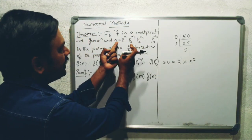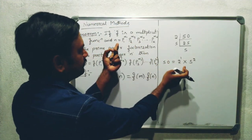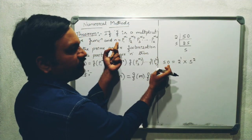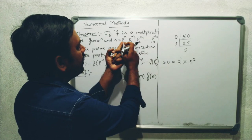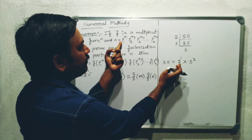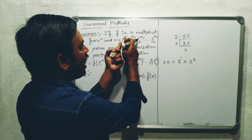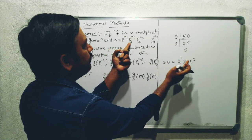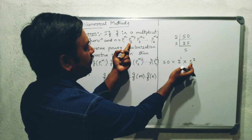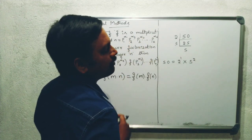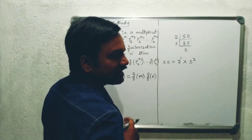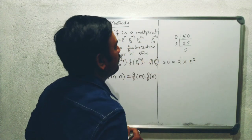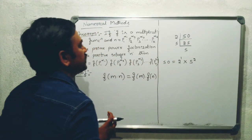See here, compare this one. Here, n is nothing but 50. P1 is nothing but 2. Alpha 1 is nothing but 1. P2 is nothing but 5. Alpha 2 is nothing but 2. So this is nothing but a prime factorization.